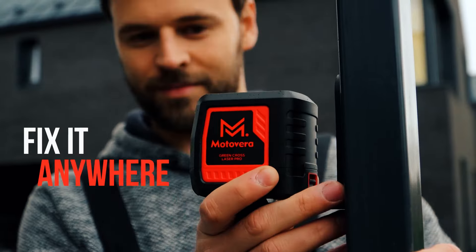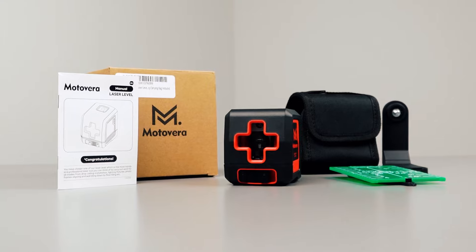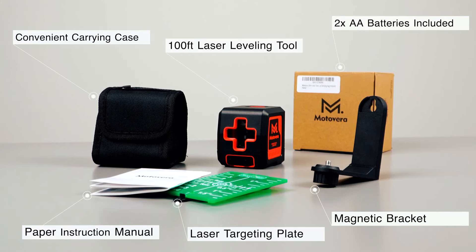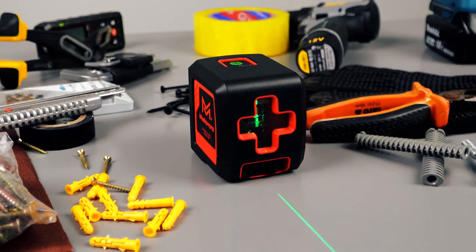The self-leveling, manual, and pulse modes cater to diverse needs. The package includes the laser level, magnetic bracket, batteries, laser target plate, and a carry-on bag backed by a 24-month warranty extension.